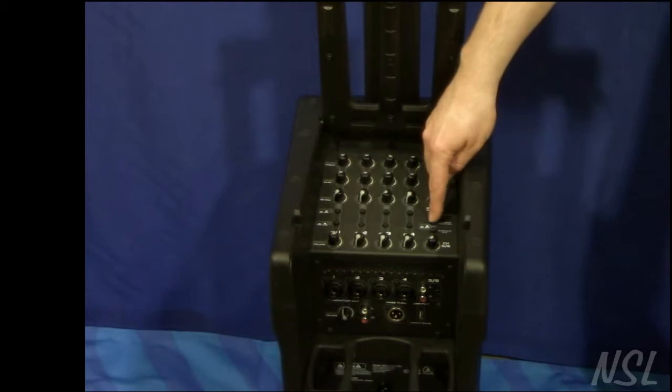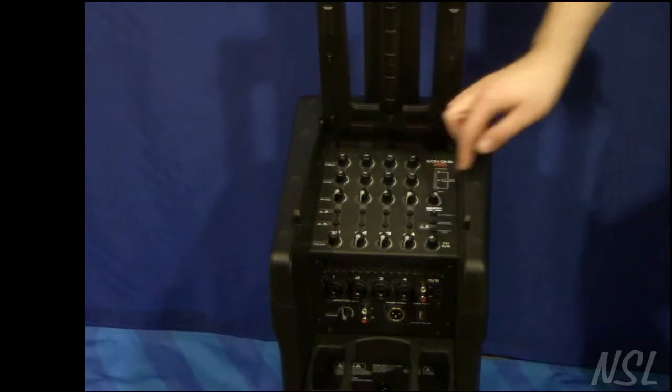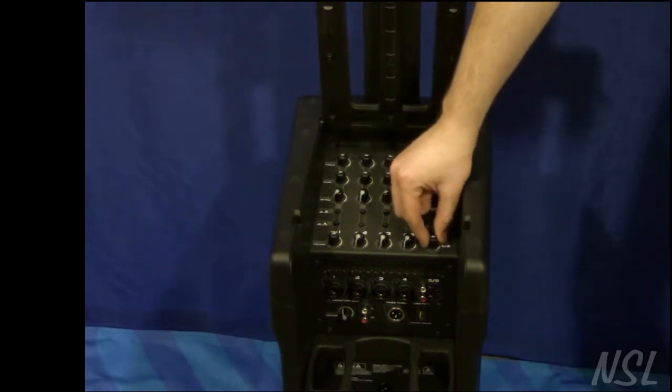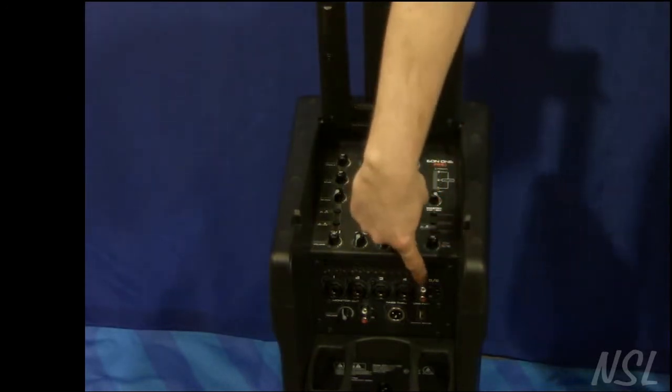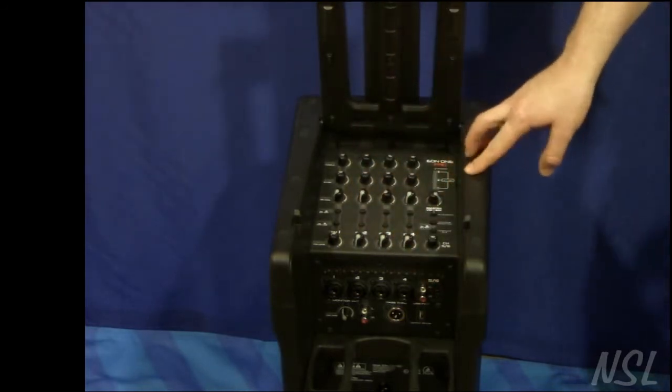Channels one and two can have phantom power, while channels three and four can have high Z inputs. Five and six are tied together and have either an RCA or 3.5mm input. Your seventh channel is Bluetooth.